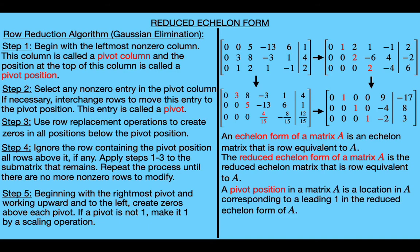I want to give the standard definition for a pivot position. A pivot position in a matrix A is a location in A corresponding to a leading one in the reduced echelon form of A. Since the reduced echelon form of A is unique, there is no ambiguity in this definition. For our example matrix the three pivot positions are: the first row second column, the second row third column, and the third row fourth column — those were the locations corresponding to the leading ones in the reduced echelon form.